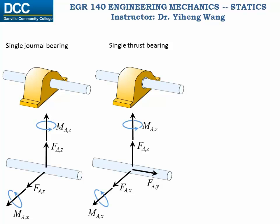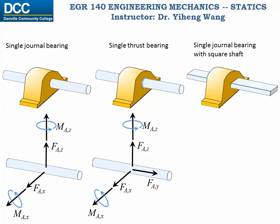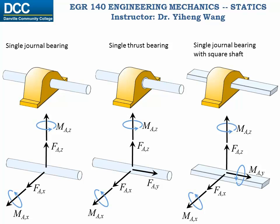Lastly, let's look at the single journal bearing with a square shaft. It looks similar to the first bearing, but now it has a square shaft which won't rotate. Therefore, when compared to the single bearing with a circular shaft, this one exerts an additional couple moment about the y axis. Please note: if these bearings are used in series or in combination with other supports, then the couple moment support reactions might not need to be considered — just consider the force reactions.